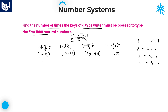Here, total from 1 to 9 means 9 numbers. For 10 to 99 — many students make a mistake at this point. They think it is 89, but that is wrong. From 10 up to 99, there are total 90 numbers.